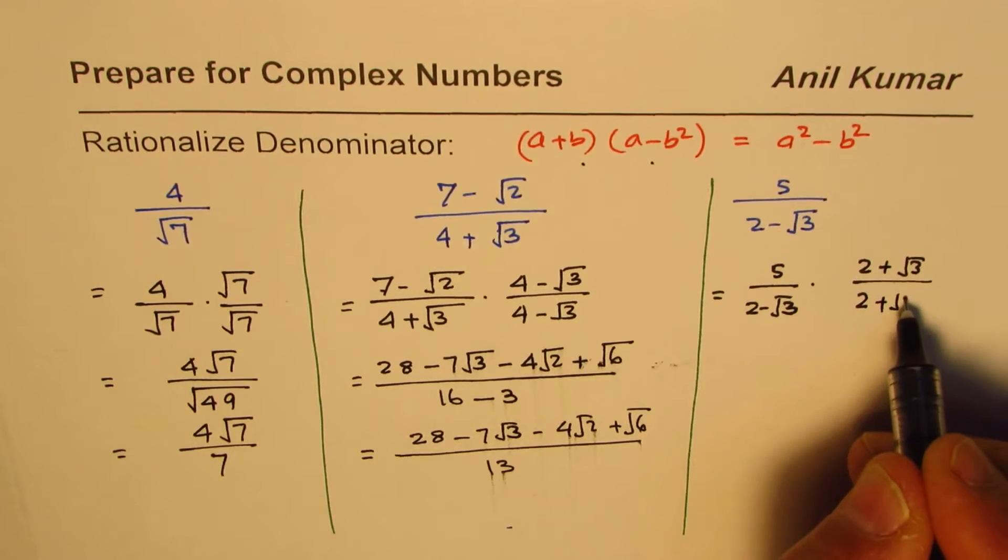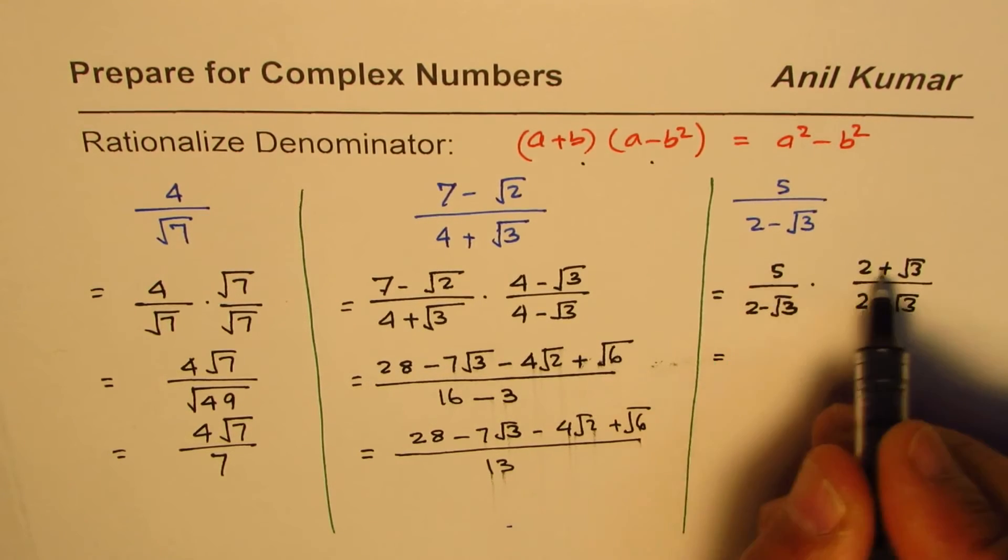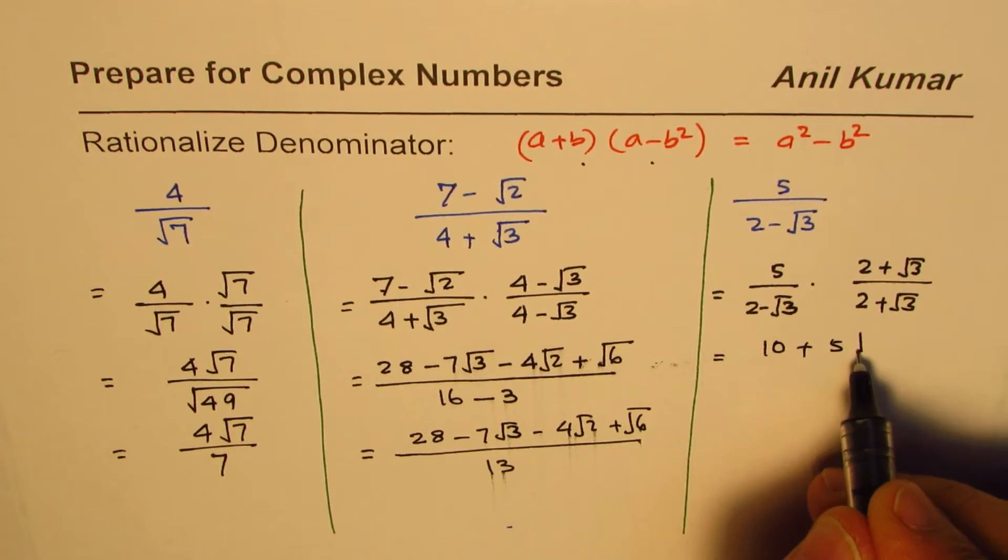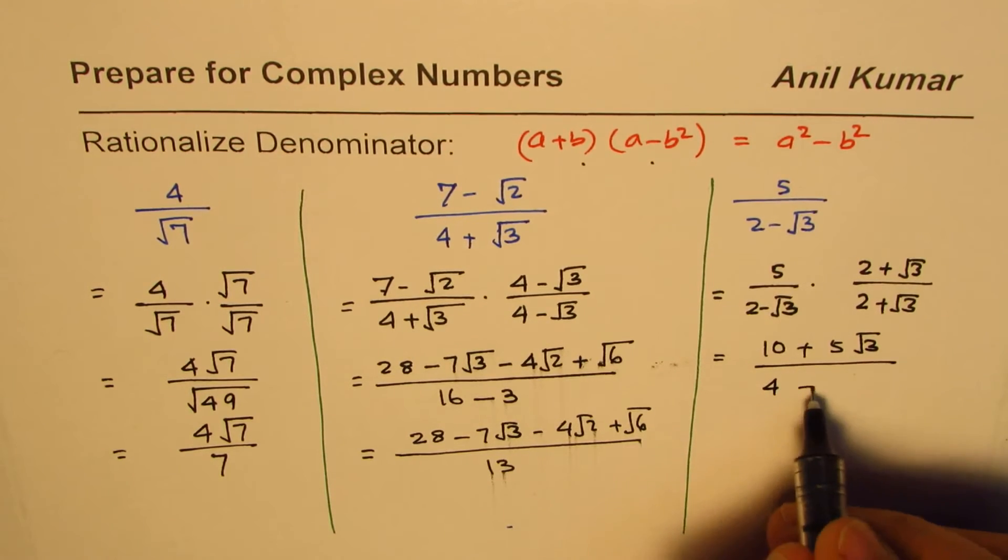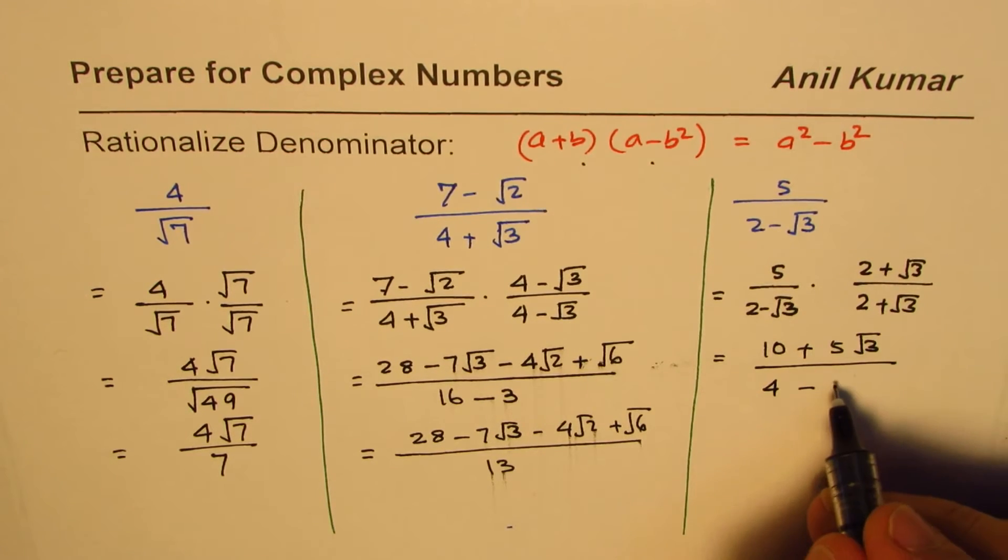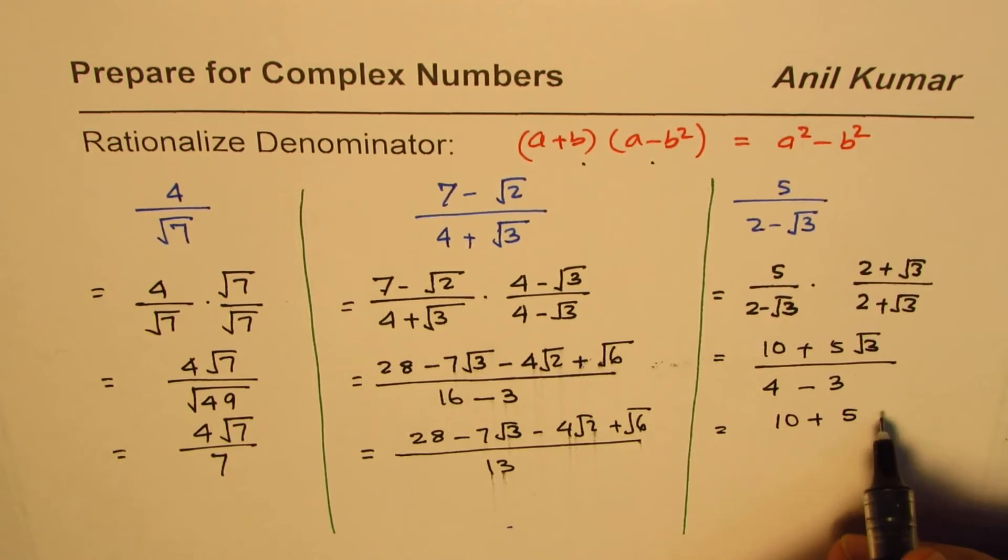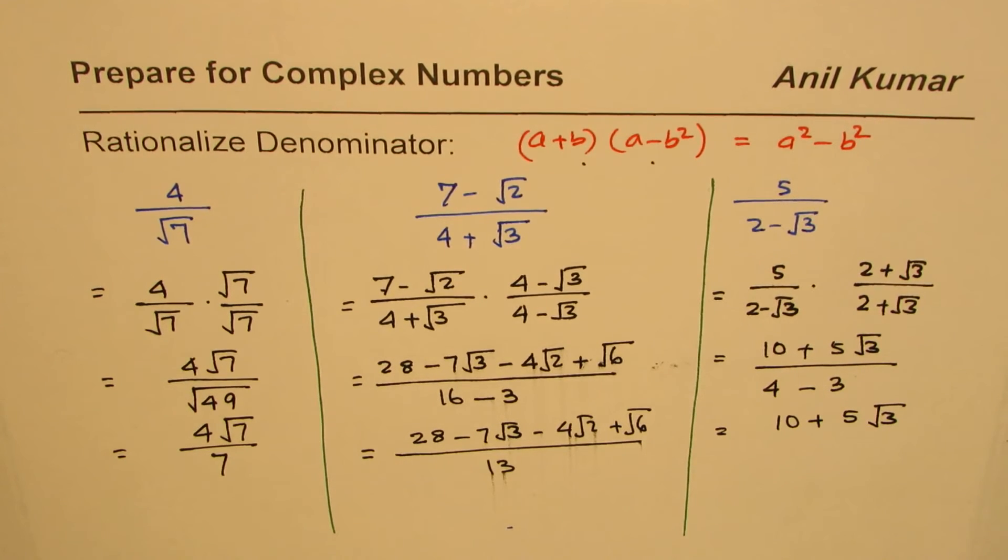You get this. Now you can multiply: 5 times 2 is 10 plus 5 times square root 3. And the denominator is a squared, which is 4, minus square root 3 squared, which is 3. And what you get is 10 plus 5 square root 3 divided by 1, or just 10 plus 5 square root 3.